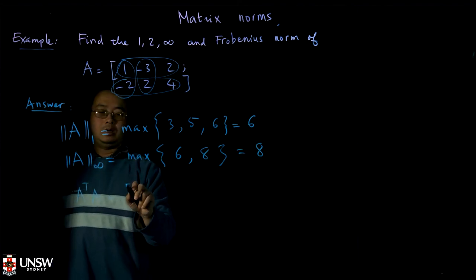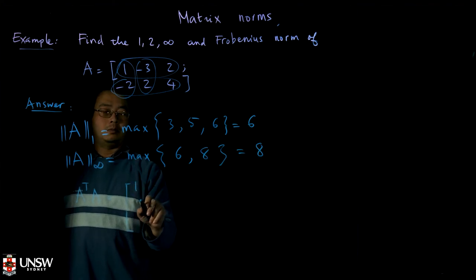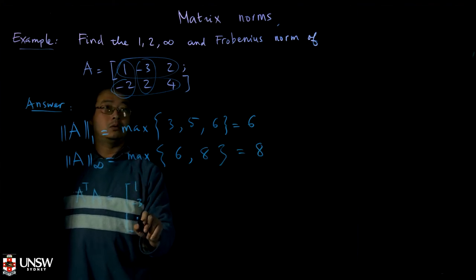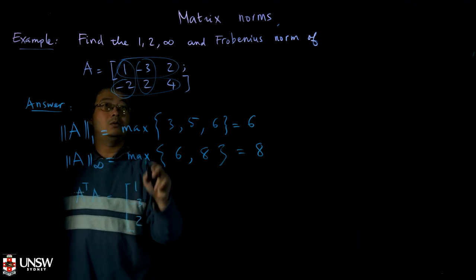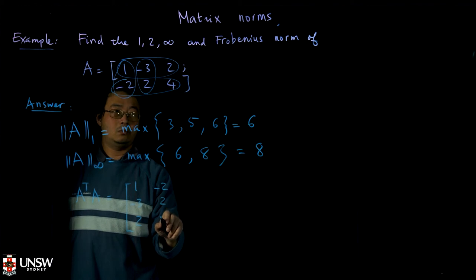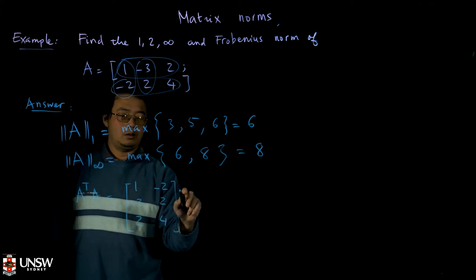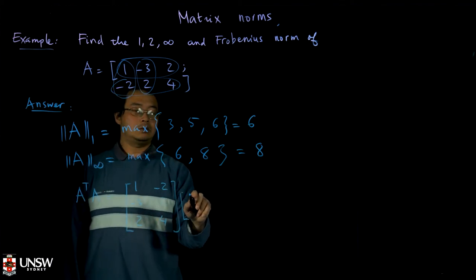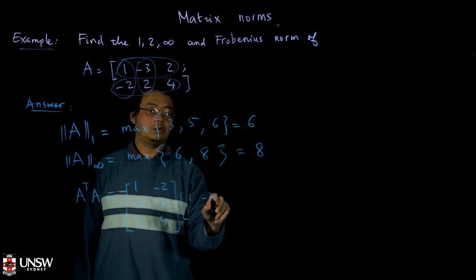So A transpose A will be 1, minus 3, 2, and then minus 2, 2, 4. And then you multiply with the matrix A, so 1, minus 3, 2,